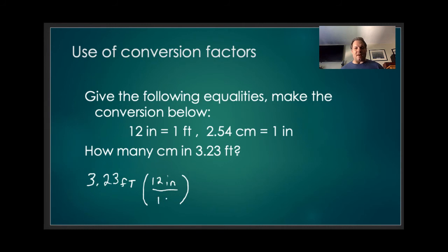I'm going to set up this conversion factor next to it by placing the 12 inches on the top and the one foot on the bottom. The reason I'm doing that is because now I have feet in the numerator here, I have feet in the denominator here. So if I have feet in the numerator and feet in the denominator, they essentially cancel. Now all I have is inches. I'm going to use this next conversion factor here by taking the 2.54 centimeters, putting that on top, and the one inch on the bottom.